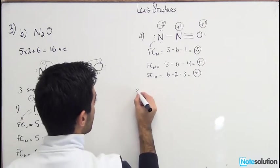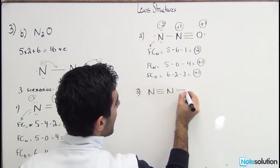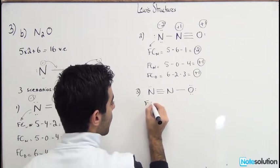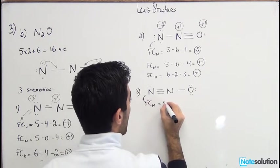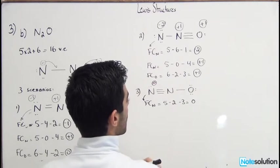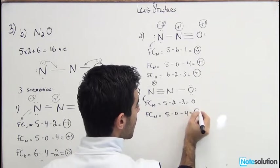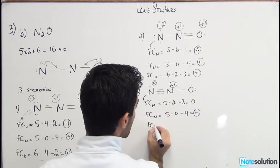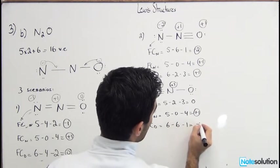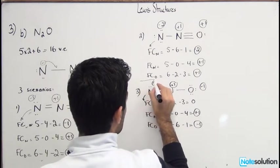Scenario three: the central N takes a triple bond from the terminal N side instead. FC of N₁ = 5 − 2 − 3 = 0. FC of N₂ = 5 − 0 − 4 = +1. FC of O = 6 − 6 − 1 = −1. Formal charges are 0, +1, −1.